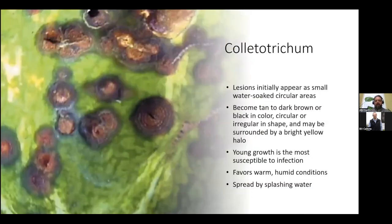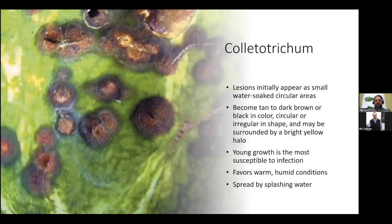One that's a really big one on foliage items is Colletotrichum. If you've had a spot on Sansevieria, most likely you've had Colletotrichum. These typically appear as small water-soaked lesions on the leaves that become tan to dark brown or black in color. They're typically circular or irregular in shape and may also be surrounded by a yellow halo. You're typically going to see the infection start on young growth, more so than the older leaves, and it favors warm, humid conditions — spread by splashing water.